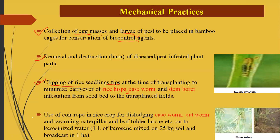Another mechanical practice is the rope dragging method, where a coil rope is dragged across the rice field surface. The pictures shown here are pollen cases — evidence of caseworm infestation causing cutting of leaf tips and leaf blades. When the rope passes over the field surface, dislodged caseworm, cutworm, and leaf folder larvae fall onto the water surface and are removed from the field. Collected infested plant parts must be destroyed in kerosene water.